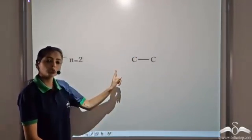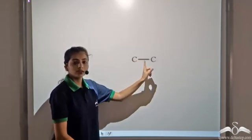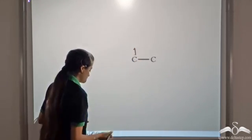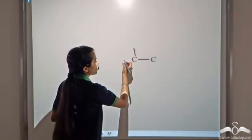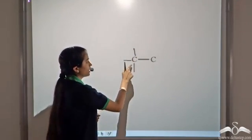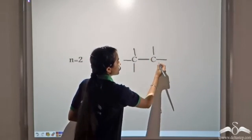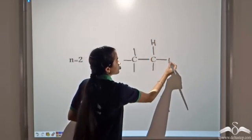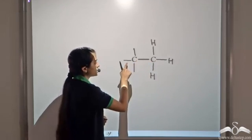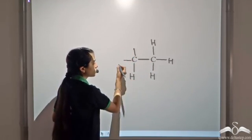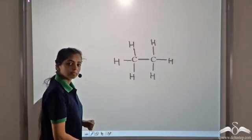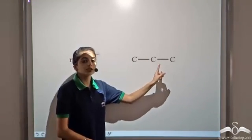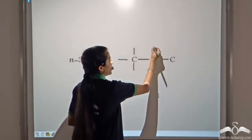Now let's see what happens when there are two carbon atoms. In alkanes, the two carbon atoms are linked to each other by a single covalent bond. Each carbon satisfies the octet rule by forming four covalent bonds — three with hydrogen and one with carbon. For n equal to three, three carbon atoms are linked to each other by single covalent bonds, and the other spaces are occupied by hydrogen atoms.